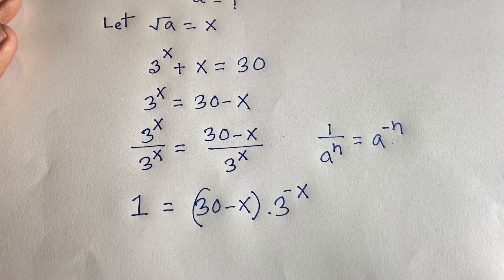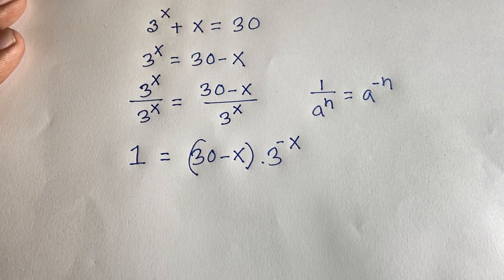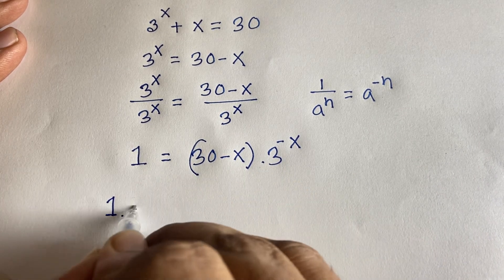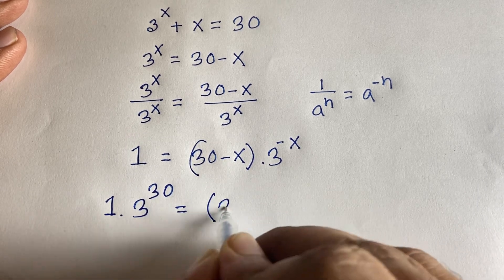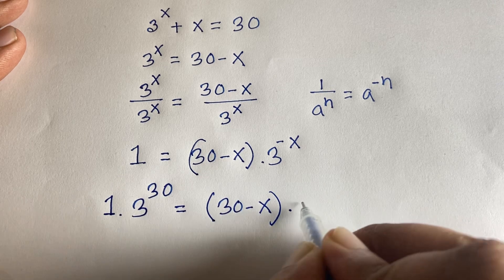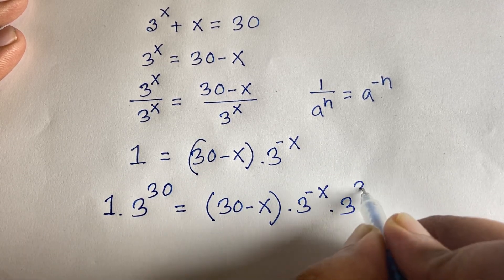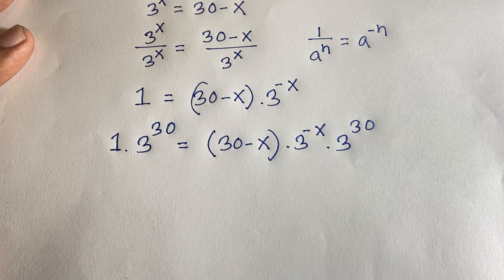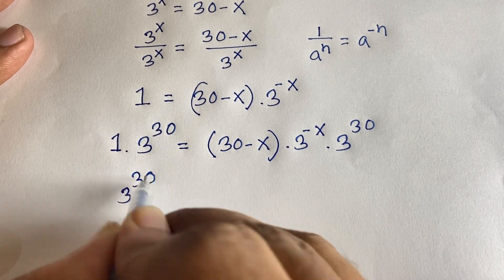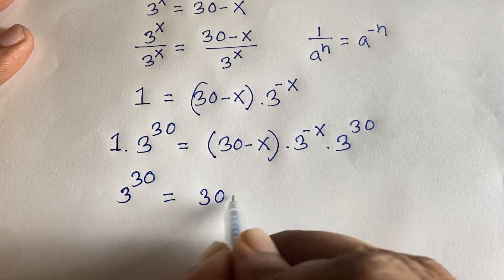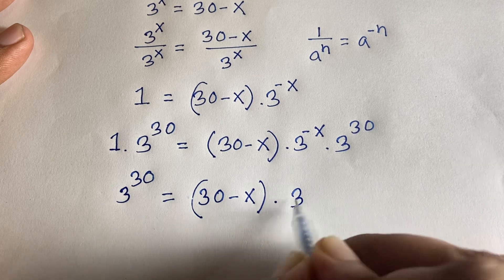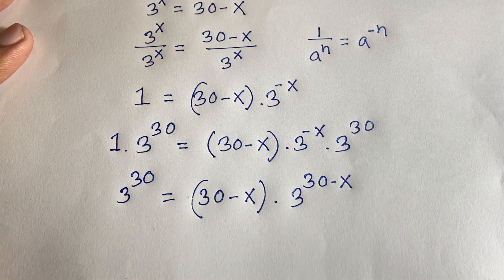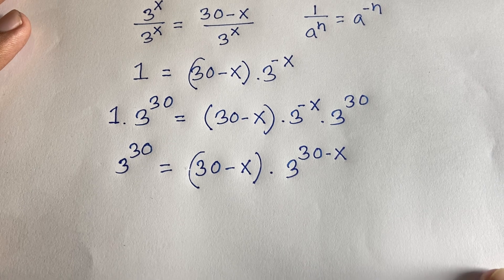Now I multiply both sides by 3 to the power 30. On the left we get 3 to the power 30, and on the right we get (30 minus x) times 3 to the power negative x times 3 to the power 30. Adding the exponents gives (30 minus x) times 3 to the power (30 minus x).